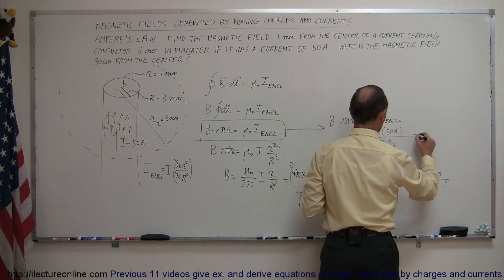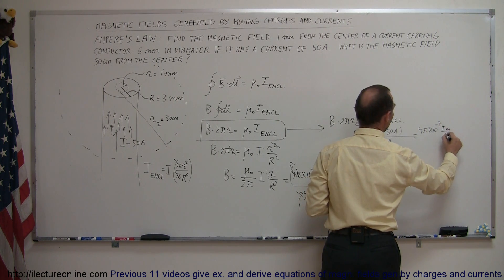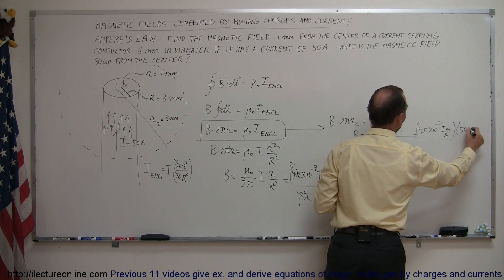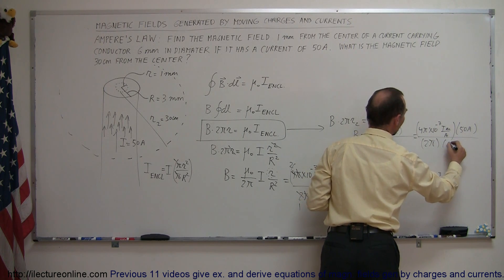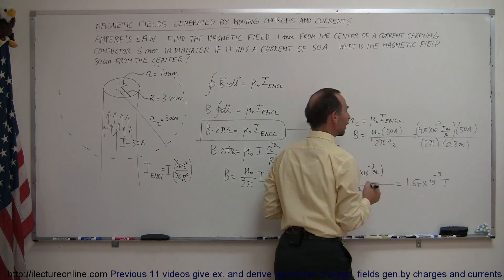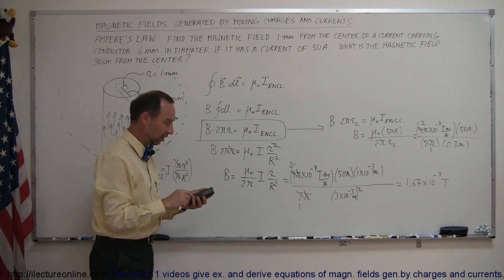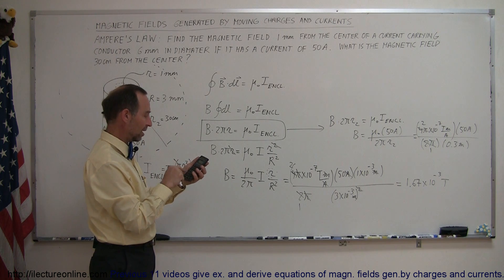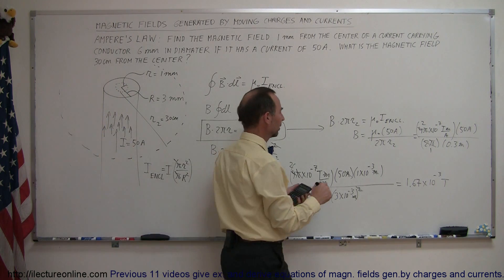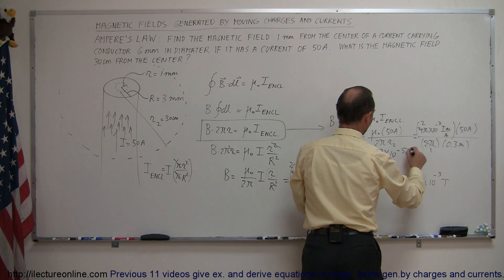So we can write B equals mu sub naught times 50 amps divided by 2π times the radius of the circle out to the point where we want to know the field strength. Plugging in numbers: mu sub naught is 4π times 10 to the minus 7 tesla·meters per amp, times 50 amps, divided by 2π times 0.3 meters. The 4π cancels with the 2π, leaving a factor of 2. The result is a B field of 3.33 times 10 to the minus 5 teslas.